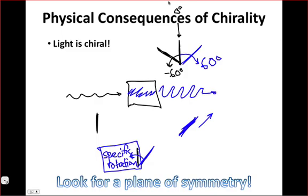So this is the primary physical consequence of chirality: that because light can be chiral, it can take on this helical form, chiral molecules can rotate the plane of polarized light, and we can actually observe that by using a polarizer.